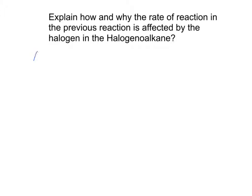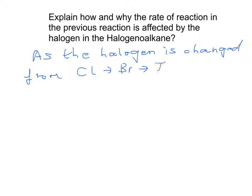So we can say as the halogen is changed from Cl to Br to I, the carbon halogen bond gets longer and weaker.